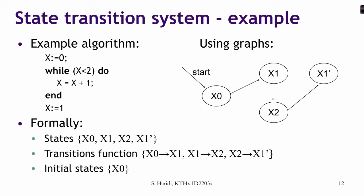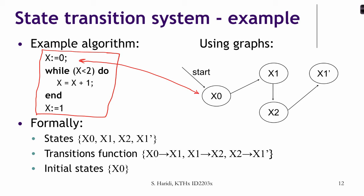Sequential programs can actually be described by a state transition system, where you move from one state to another in a deterministic way — there is only one way to move. Looking at this little program, we can describe it as a state transition system by drawing the graph corresponding to it. Initially we are in the state where x equals 0, and if we pass through the test and execute the statement, we move to the next state.